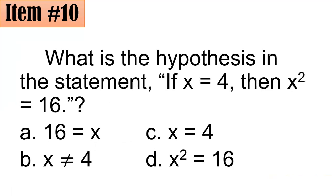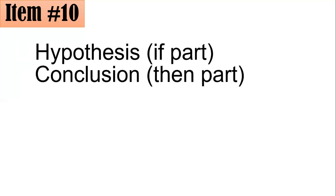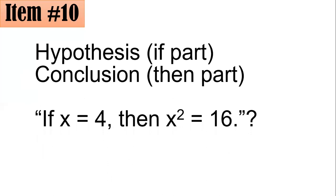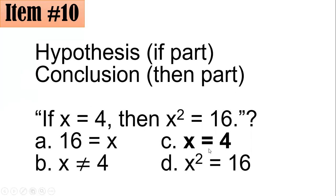Number 10: What is the hypothesis in the statement 'If x equals 4, then x squared equals 16'? Is it 16 equals x, x is not equal to 4, x equals 4, or x squared equals 16? The hypothesis is the 'if' part of a conditional statement, and the conclusion is the 'then' part. So 'x equals 4' is the hypothesis and 'x squared equals 16' is the conclusion. The correct answer is letter C.